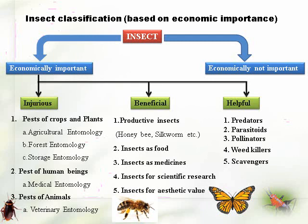Some insects are not economically important, meaning neither they are giving any benefits to human beings nor are they going to damage any human being's property. So economically important insects are classified into injurious, and helpful insects. Injurious insects are pests of crop plants, which comes under agriculture entomology, forest entomology, and storage entomology. The pests of human beings are studied in medical entomology, as we have seen in the first lecture with the classification of entomology.